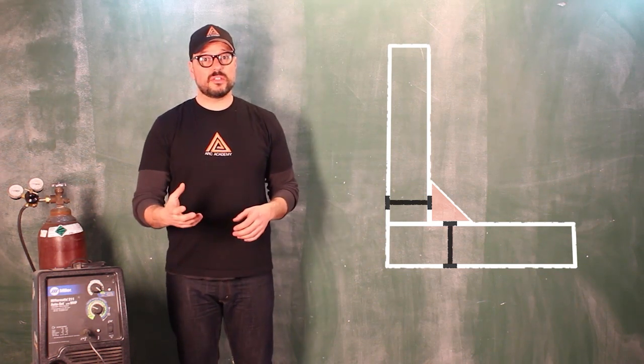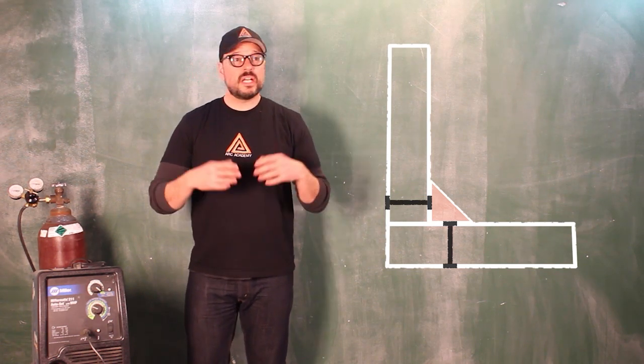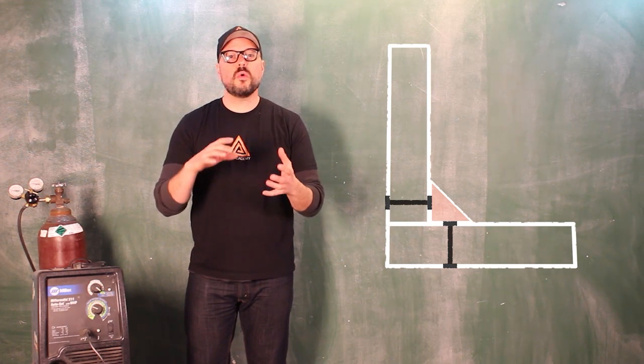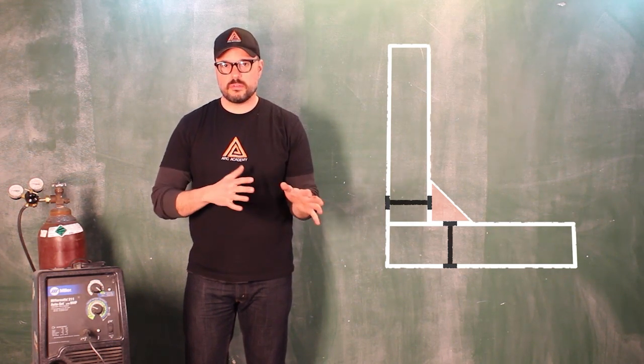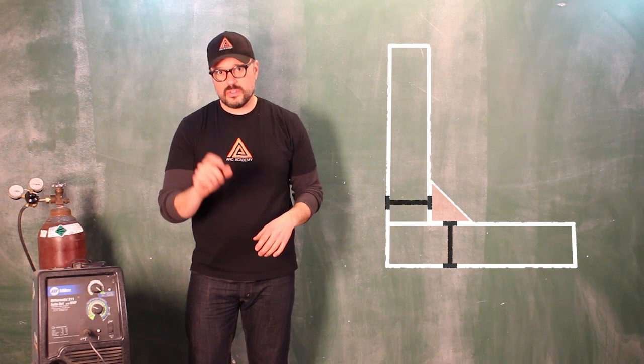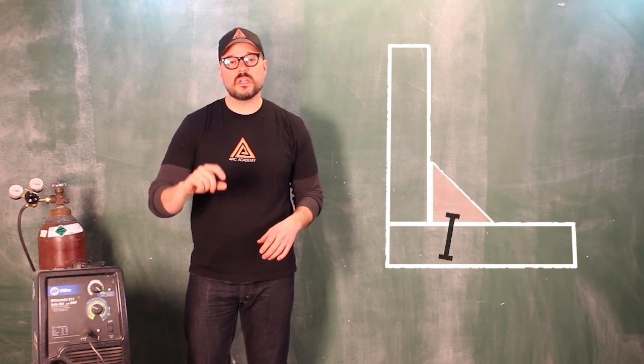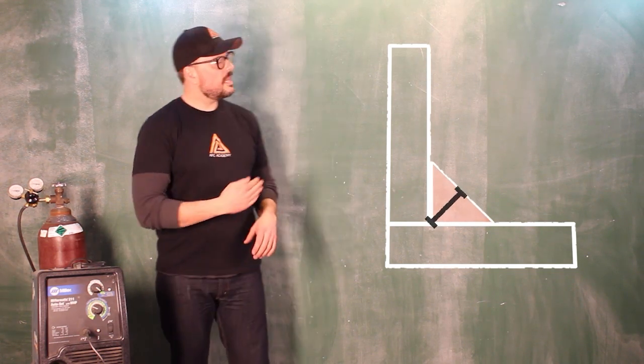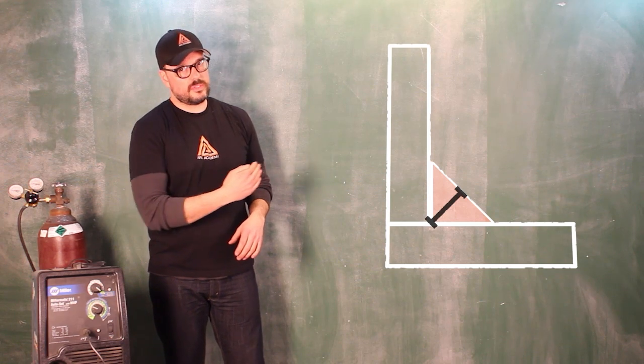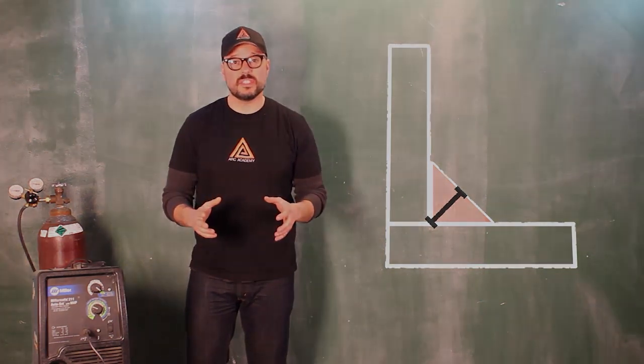Now, if you are making something structural such as a staircase, anything that's going to hold a lot of weight or take torsion through it, you're going to want the throat to be equal to the thickness of the material. So anywhere in that wheelhouse, that's what we're shooting for while you are practicing.